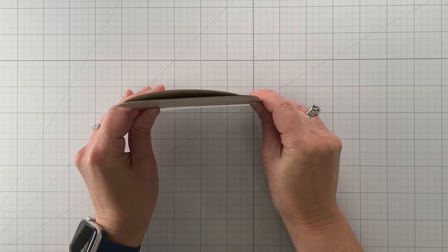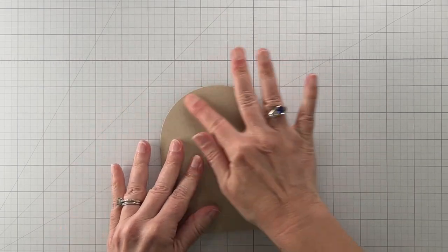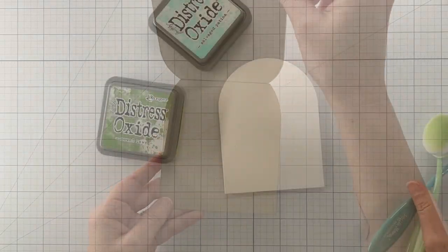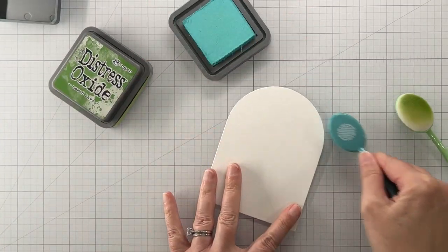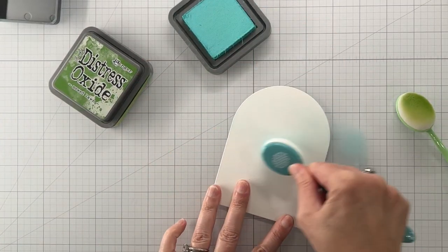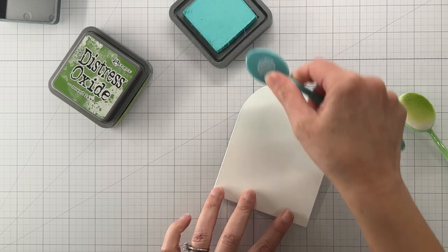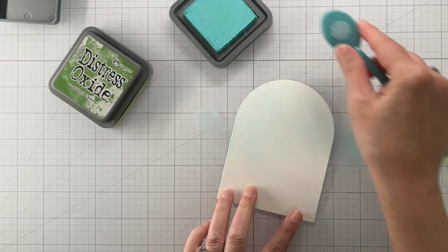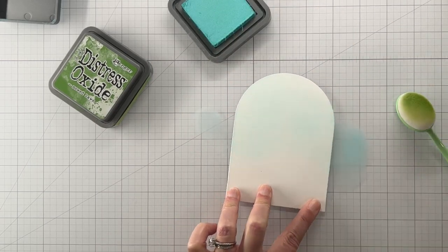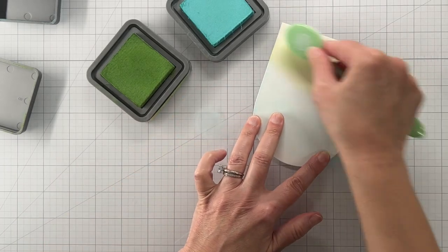And then you adhere that to the front of the card and it's really easy. So if you ever want to make a shaped card it doesn't matter what shape it is, this is how you do it.